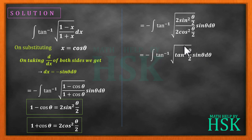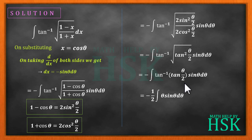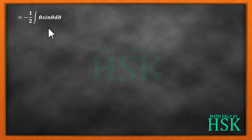The square root and the square cancel, so we get tan inverse of tan (theta by 2), times sin theta d theta. Then tan inverse and tan cancel, giving us minus (1/2) times the integration of theta sin theta d theta.